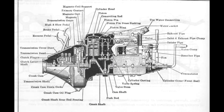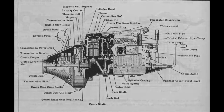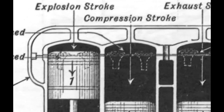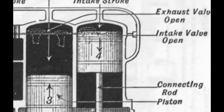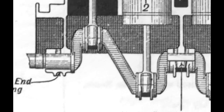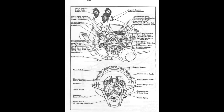Previous Ford four-cylinder cars had the cylinders cast in two blocks of two, but the Model T had all four cylinders cast in one block with a single detachable cylinder head. Also, the Model T placed the steering gear and controls on the left-hand side of the car. Within a few years, every automobile manufacturer followed suit, and left-hand drive became the standard.